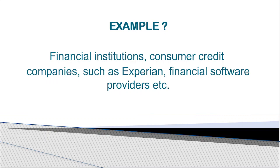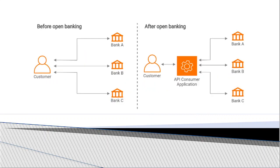AISPs help customers access account information from separate bank accounts via a single view. Examples of such companies include financial institutions, consumer credit companies, and financial software providers. Before open banking, if you had accounts in three banks — Bank A, Bank B, and Bank C — every time you wanted to check a mini statement or account balance, you had to log into three different bank mobile apps or web applications.